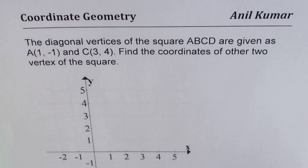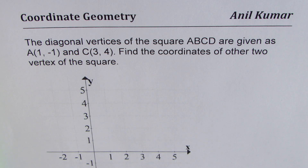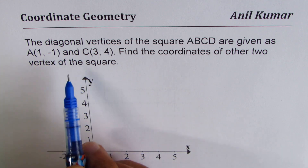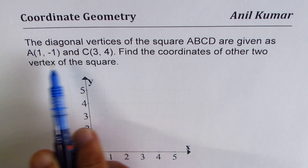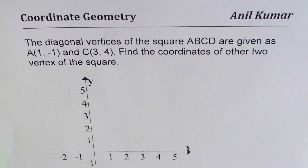I'm Anil Kumar sharing with you a question from my subscriber, so let me first thank all the subscribers for taking keen interest and posting excellent questions. The question here is: the diagonal vertices of the square ABCD are given as A(1, -1) and C(3, 4). Find the coordinates of the other two vertices in the square. So we are given two diagonally placed vertices and we have to find the other two.